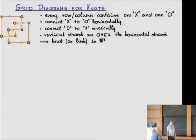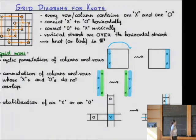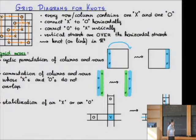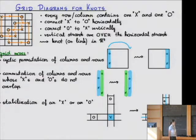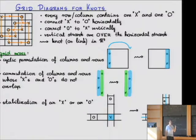You can smooth it out a little bit if you like. I'm going to assume for simplicity that everything is a knot. There are moves called grid moves which don't change the knot but change the grid. One of them is cyclic permutation: if you have a grid diagram, you can move the left-hand column to the right-hand side, or vice versa, and you can do the same with the rows.